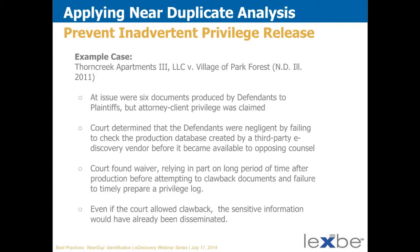In the Thorn Creek Apartments case from a couple of years ago, six documents were produced that the defendants later claimed were privileged. The court determined that the defendants were negligent in not checking quickly enough — they didn't really figure it out until they were in depositions. Simply because there had been a long period of time after production before the clawback was claimed, the court found waiver. The court also didn't like that the privilege log wasn't prepared quickly. And again, even if the court had allowed clawback, the sensitive information already would have been disseminated — we can't assume we'll automatically be able to get these back.